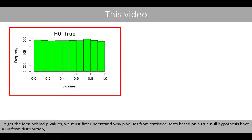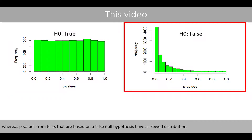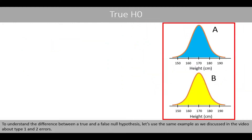To get the idea behind p-values, we must first understand why p-values from statistical tests based on a true null hypothesis have a uniform distribution, whereas p-values from tests that are based on a false null hypothesis have a skewed distribution. To understand the difference between a true and a false null hypothesis,